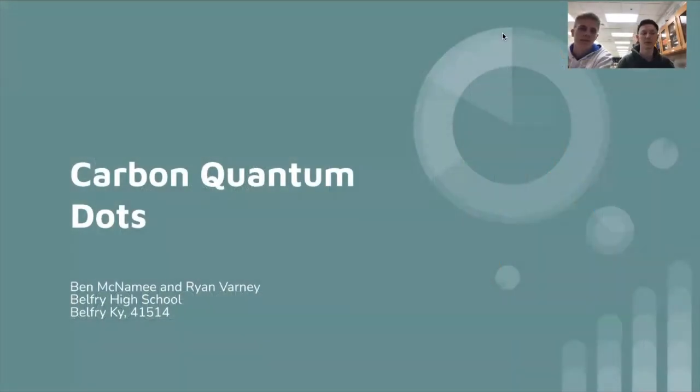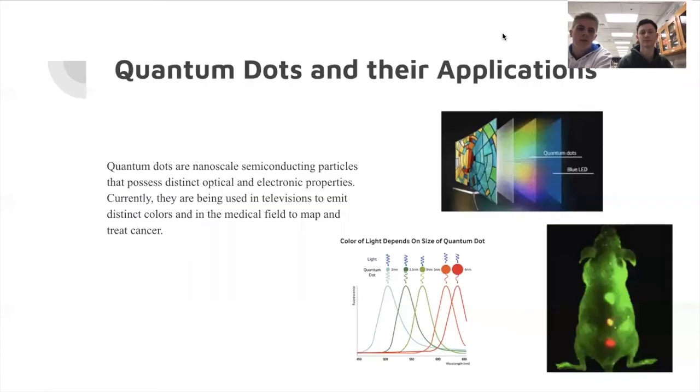Hello, I'm Ben McNamee and I'm Ryan Varney and this is our project on carbon quantum dots. Quantum dots are small nanoscale particles that possess distinct optical and electronic properties. Currently quantum dots are being used in televisions to emit better and more distinct light and color, and there is also promising use of quantum dots in the medical field for mapping and treating cancer more directly.